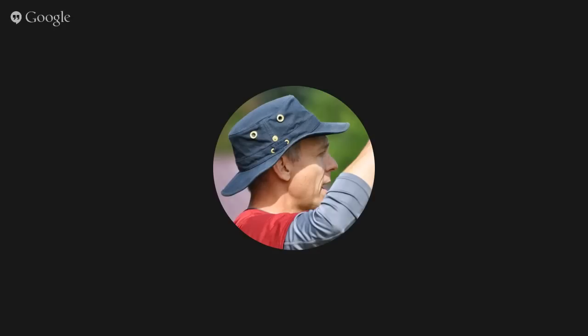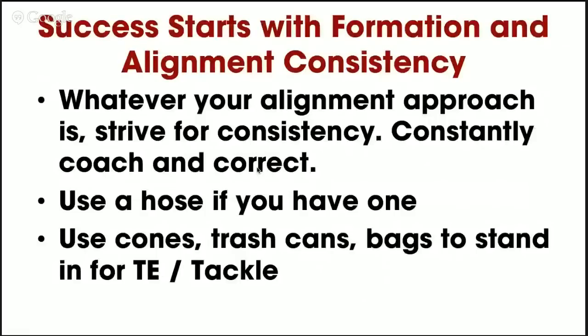Before anything about footwork, you have to come from a known starting position with consistency. That means your backfield is consistently lined up within your formation approach. We tend to run the traditional Wing-T formation with a strong-side wingback and a weak-side halfback — or dive back — just outside the tackle's leg. We also run a lot from the double wing, which we call 'Rose' and 'Lily' — Rose when the tight end is right, Lily when he's left.